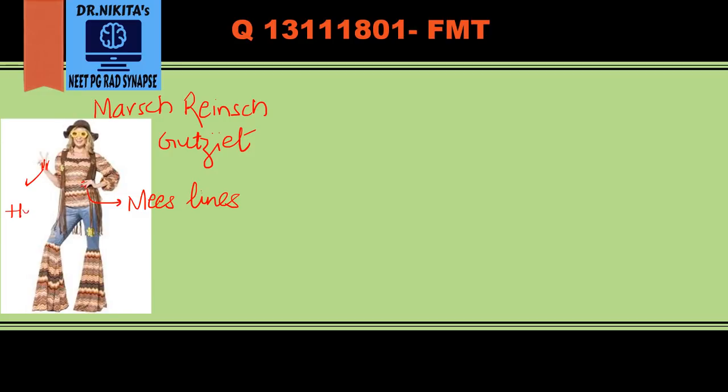She puts nail paint — this nail paint represents the Aldrich Mees lines, which are seen on nails in arsenic poisoning. She puts mehendi, which represents hyperkeratosis, also seen in arsenic poisoning. Then she wears black footwear, representing black foot disease seen in arsenic poisoning.